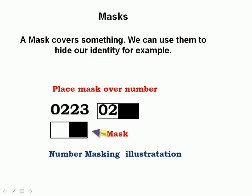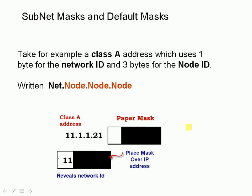A mask covers something — something we want to hide. We can use it to hide our identity, for example. Here, we're going to use a simple paper mask that has a hole cut out in it. If we place this mask over a number, we get rid of part of it, and another number pops out. We can use the same idea for IP subnetting.